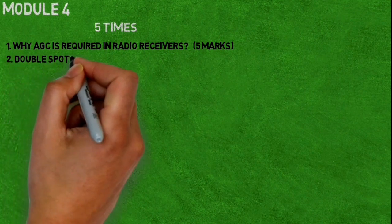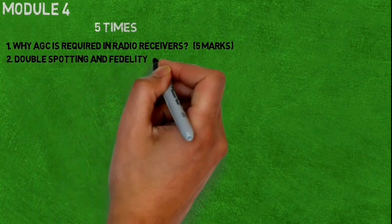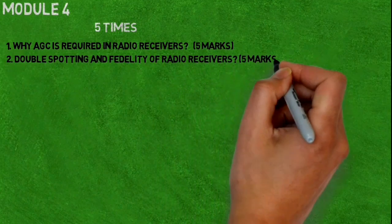Second question is: double spotting and fidelity of radio receivers. It may come for five marks.